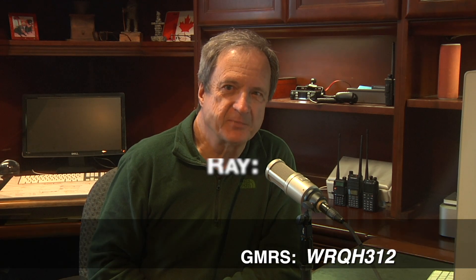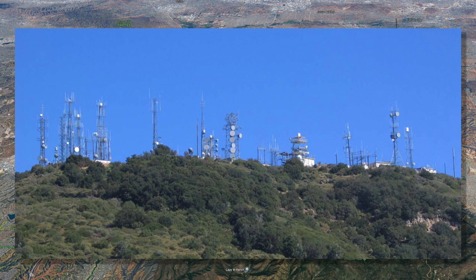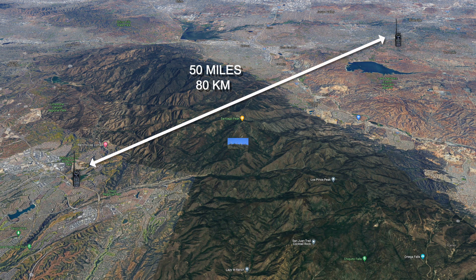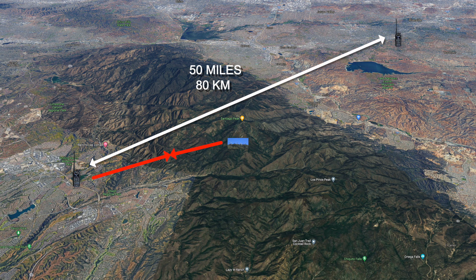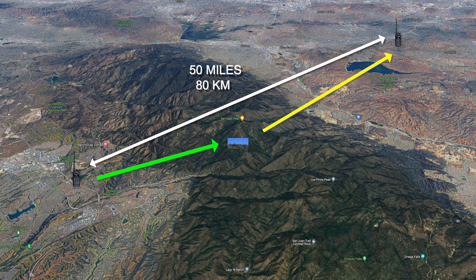Today we're going to take a look at how to set up your radio to operate through a radio repeater. A repeater is a radio relay station that is typically located on a high structure or mountaintop and extends the range that two or more radios can talk. It does that by receiving your signal and retransmitting it in real time. However, repeaters cannot listen and talk at the same time on the same frequency. What they can do is receive on one frequency and transmit on a completely different frequency at the same time. These two different frequencies are a repeater split frequency pair.